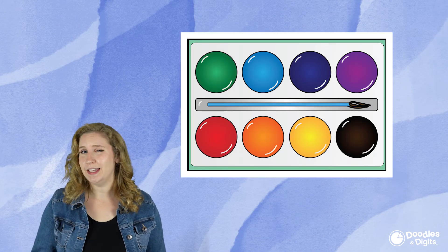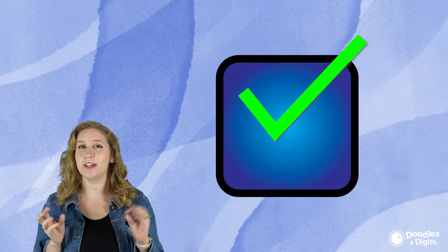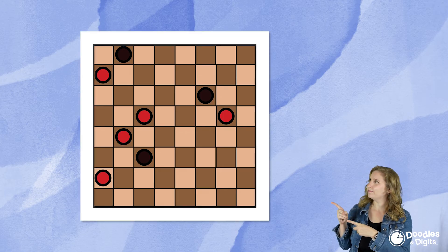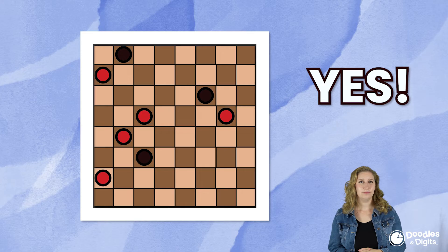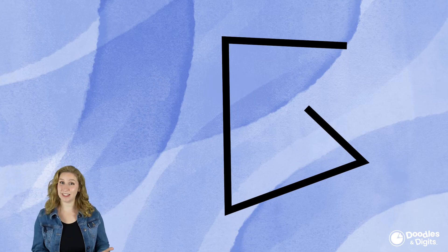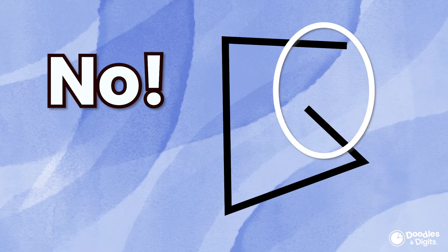Now we're going to try a few together. First, we're going to see if we can detect which ones are quadrilaterals and which ones are not. Let's look at this shape right here. What do you think? Is this a quadrilateral? Yes, this shape right here is a square. Let's try another one. What about this shape right here? Is this a quadrilateral? No, this is not a quadrilateral because it's not a closed shape and it doesn't have four vertices.